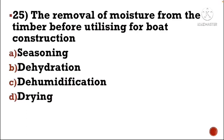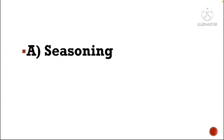Next question: The removal of moisture from timber before utilizing for boat construction is — Option A: seasoning, Option B: dehydration, Option C: dehumidification, Option D: drying. The correct answer is Option A, seasoning.